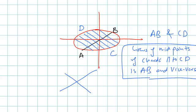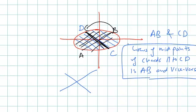AB and CD are conjugate diameters because the locus of midpoints of chords drawn parallel to CD is AB, and the locus of midpoints of chords drawn parallel to AB is CD. So a pair of conjugate diameters means: take the first diameter, draw series of chords parallel to it, join their midpoints — you get the second diameter. Take the second, draw chords parallel to it, join midpoints — you get the first. That's how they are related.